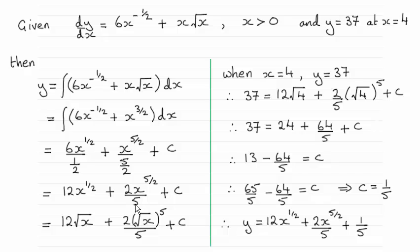Okay, and then because I'm going to be working towards finding c, I decided to convert these back to root form. So this was 12 times the square root of x, and then for the x to the power 5 over 2, it's best to think of this as the root of x, with that 2 there, the root of x, then all to the power 5. It makes working this out a lot simpler.